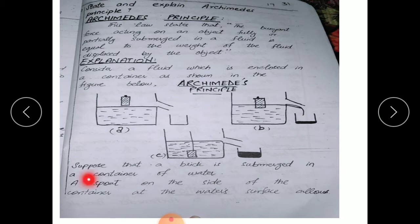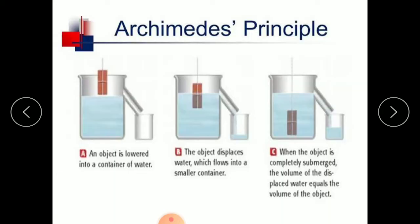Suppose that a brick is submerged in a container of water. A spout — this is called the spout — on the side of the container at the water surface allows water to flow out. You can see in this picture: an object is lowered into a container of water, the object is partially submerged and water through the spout comes out into the smaller beaker. When the object is completely submerged, the volume of the displaced water is equal to the volume of the object.